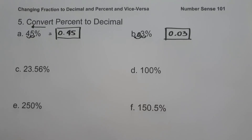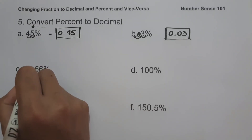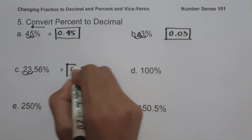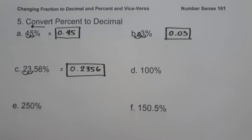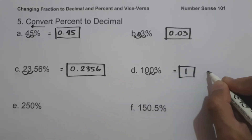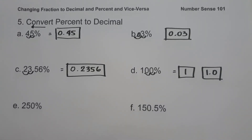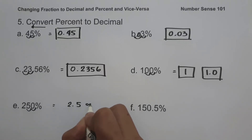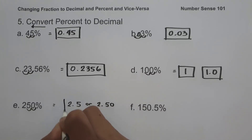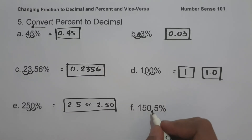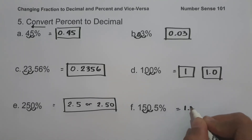On letter C, we have 23.56%. Moving two decimal places from right to left gives us 0.2356. On letter D, we have 100%. Moving two decimal places gives us 1, or 1.0. On letter E, we have 250%. Moving two decimal places from right to left gives 2.5. On letter F, we have 150.5%. Moving two decimal places gives us 1.505.